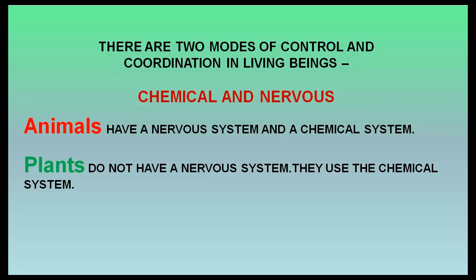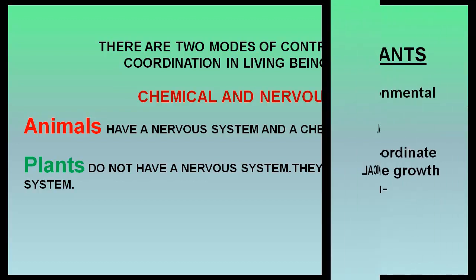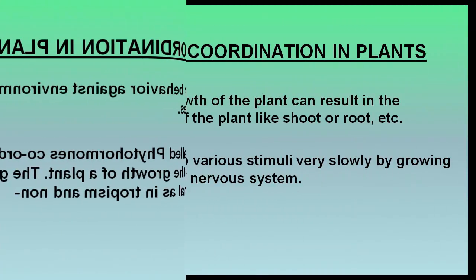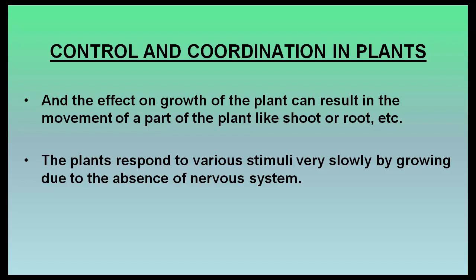Animals have a nervous system and a chemical system. Plants do not have a nervous system. The plants coordinate their behavior against environmental changes by using hormones. The hormones in plants, called phytohormones, coordinate their behavior by affecting the growth of a plant. The growth movement can be directional as in tropism and non-directional as in nasties. Plants respond to various stimuli very slowly by growing, due to the absence of a nervous system.